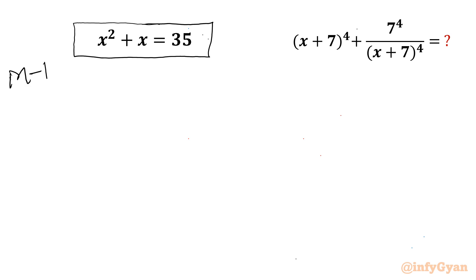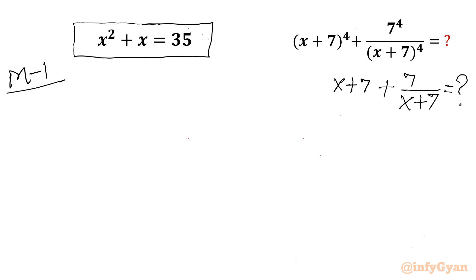In Method 1, my target expression is x+7 + 7/(x+7). Once this is known, we can square two times and collect our answer. Note that our denominator cannot be 0, so x cannot be -7.